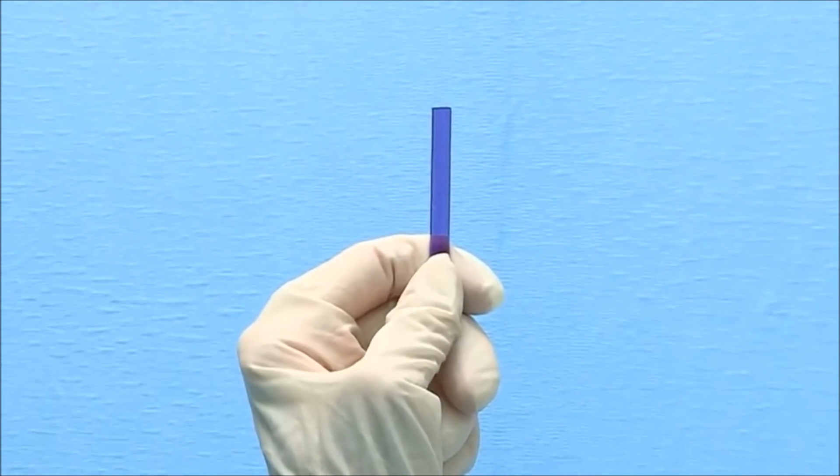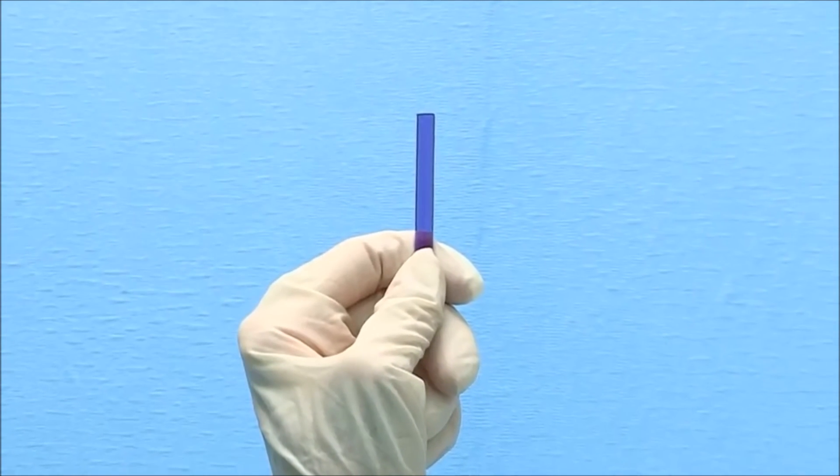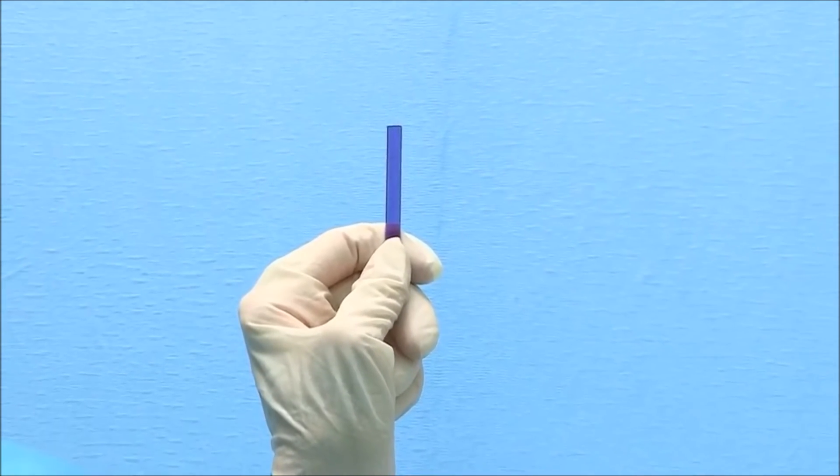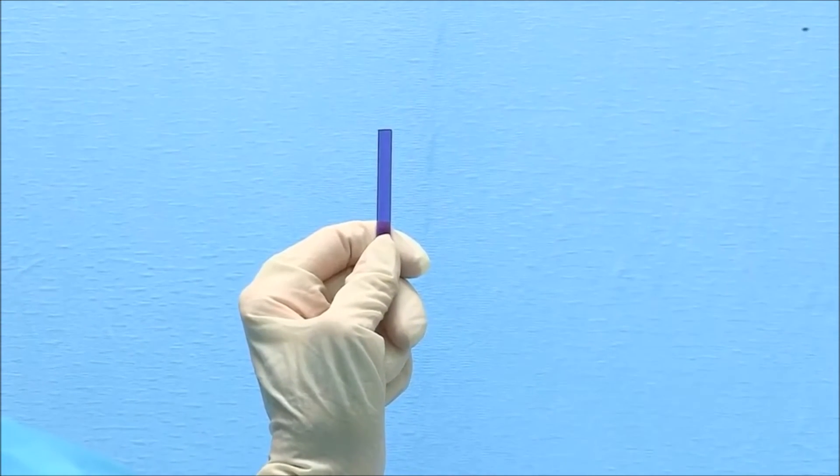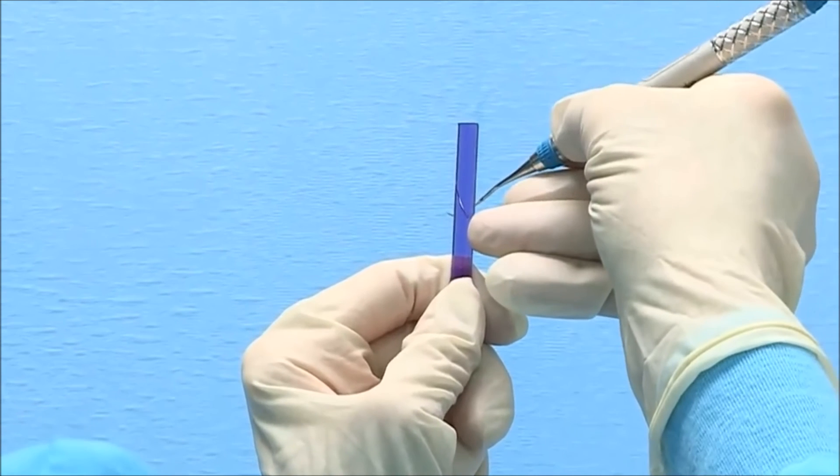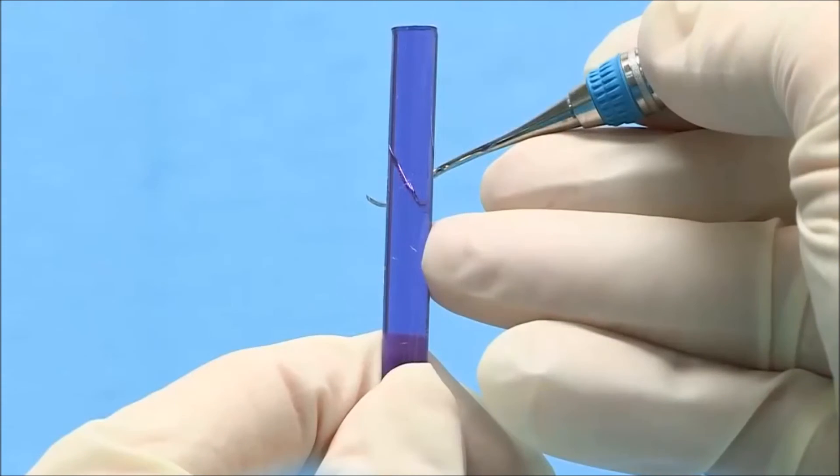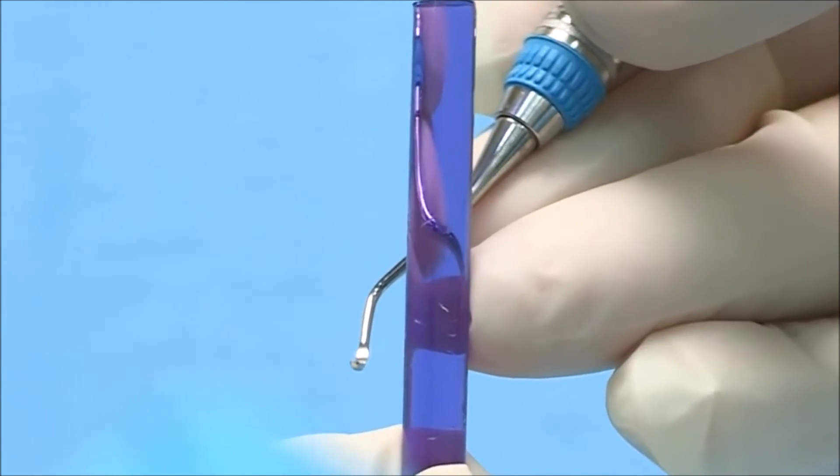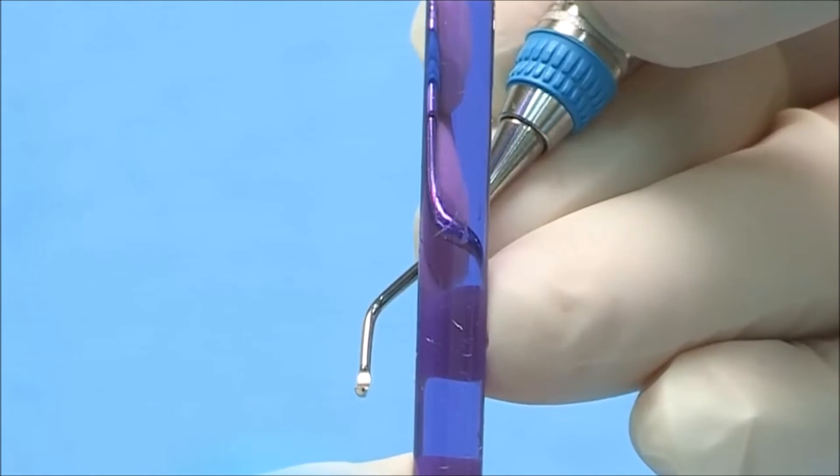To test the cutting edge, hold a plastic test stick in your non-dominant hand between your thumb and index finger near the bottom of the stick. Hold the test stick upright at 12 o'clock. Hold the instrument in your dominant hand with a modified pen grasp. Place your fulcrum on the right side of the test stick near the middle of the stick. Bring the instrument around the back of the test stick with the toe pointed toward you.